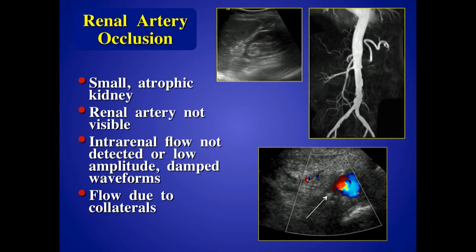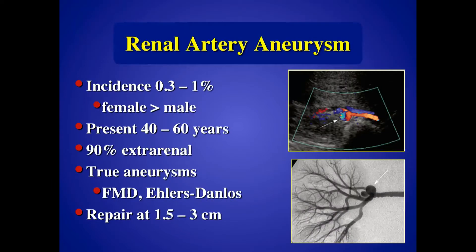There are lots of other things we see incidentally in the kidneys — aneurysms, occlusion, pseudo-aneurysms, and tumors. Here's a patient with a renal artery occlusion — the kidney is small and atrophic, barely any parenchyma surrounding the echogenic hilum. We just see a nubbin at the origin of the right renal artery — you don't see the artery at all, correlating very well with the MRA. You may see flow inside the kidney, but if you do see flow inside a kidney with an occluded artery, it's typically very abnormal — very low velocity and a very rounded appearance because the flow is coming in via collaterals. Here's an example of a renal artery aneurysm with angiographic correlation — not very common but you'll see them once in a while. They occur more often in women than men, typically middle age, with 90% extra renal.